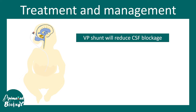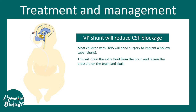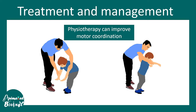Treatment and management includes incorporation of a VP shunt (ventriculoperitoneal shunt), which requires surgery for implantation. This drains the excess cerebrospinal fluid to the peritoneum, balancing intracranial pressure. Other supportive treatments include physiotherapy, speech therapy, and supportive medications.